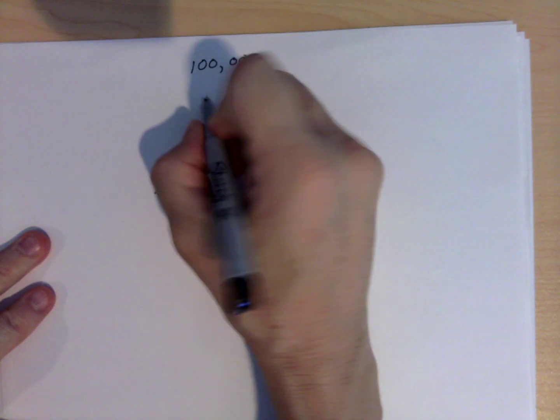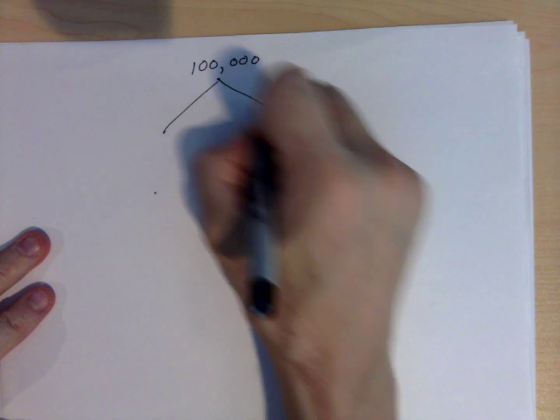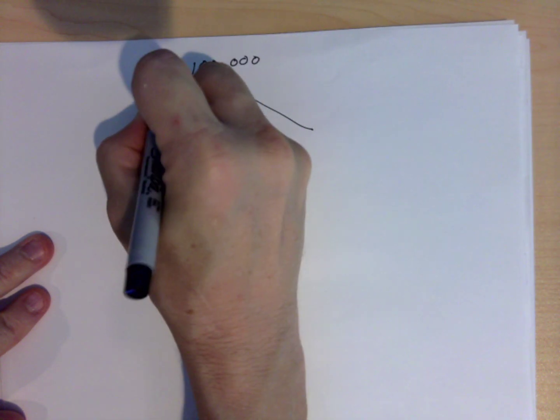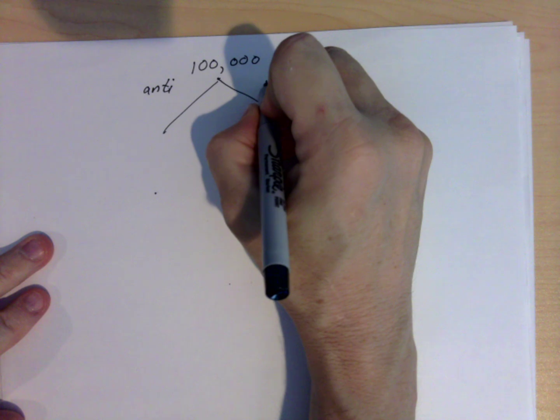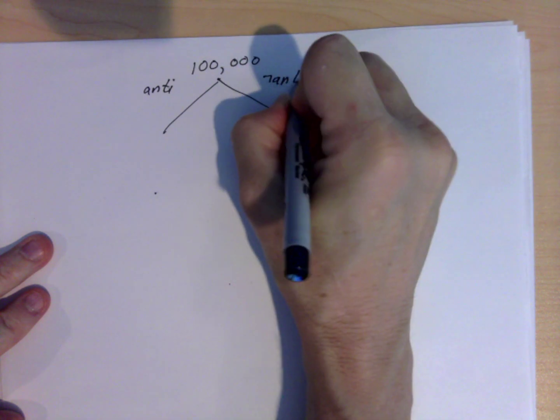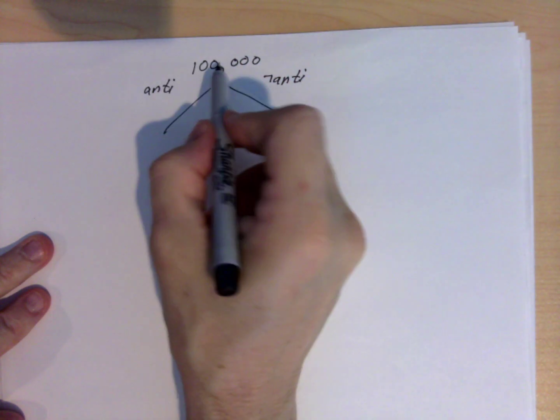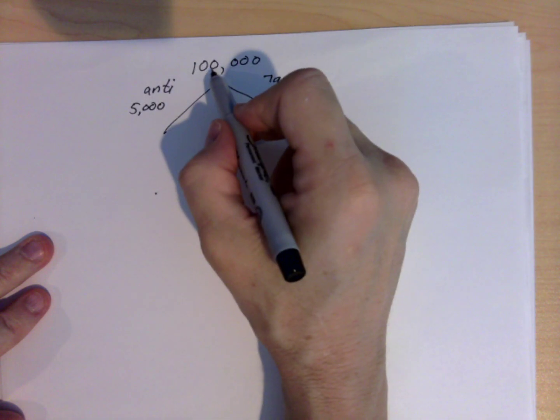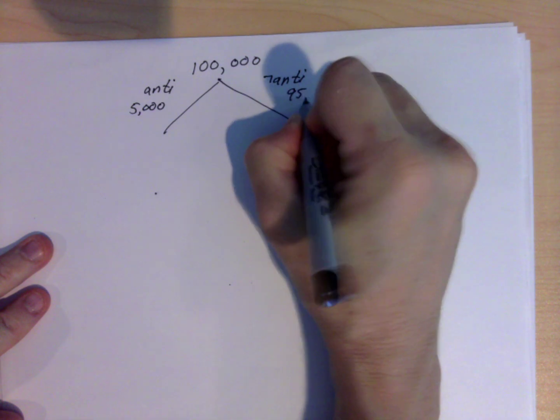So if I take those 100,000, I can subdivide it into the 5% that have antibodies and the 95% that don't have antibodies. So 5% of this is 5,000 and 95% of 100,000 is 95,000.